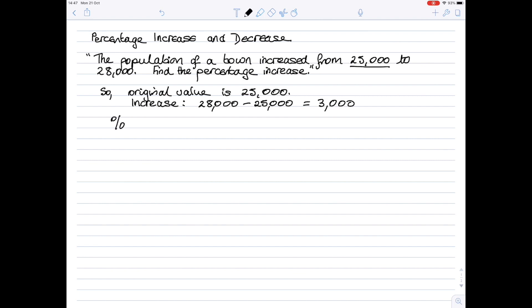So your percentage increase is the actual increase over the original. You write that as a fraction and then convert it into a percent. So the increase is 3,000, the original is 25,000. So that's the fraction. Then to make it into a percent, I'm going to multiply by 100.